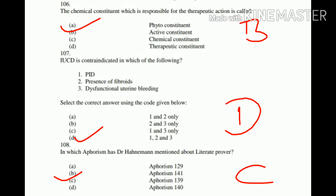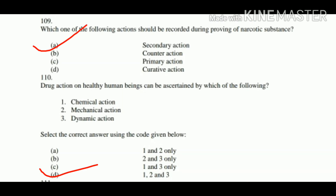Question number 108: In which aphorism did Dr. Hahnemann mention the literate prover? A. Aphorism 129, B. Aphorism 141, C. Aphorism 139, D. Aphorism 140. The right answer is Aphorism 139, option C.